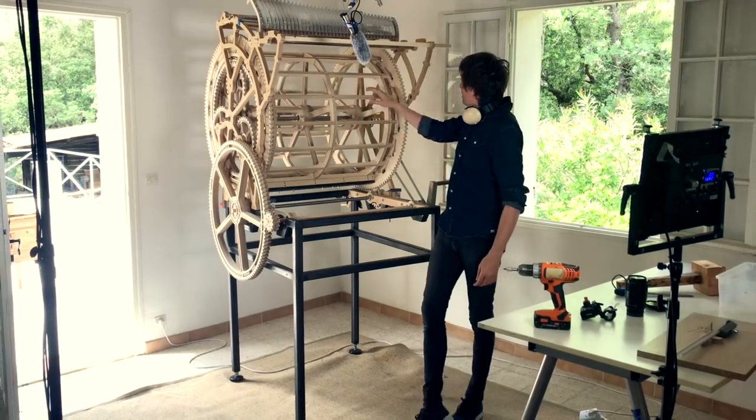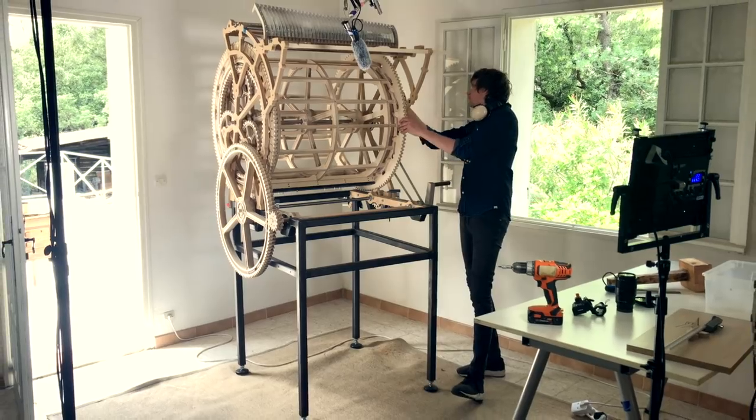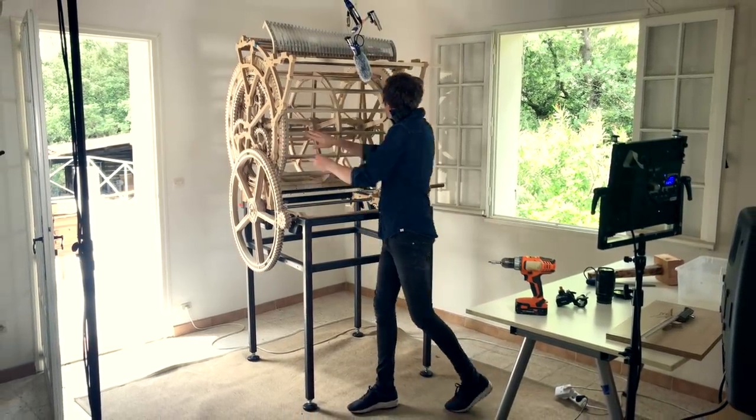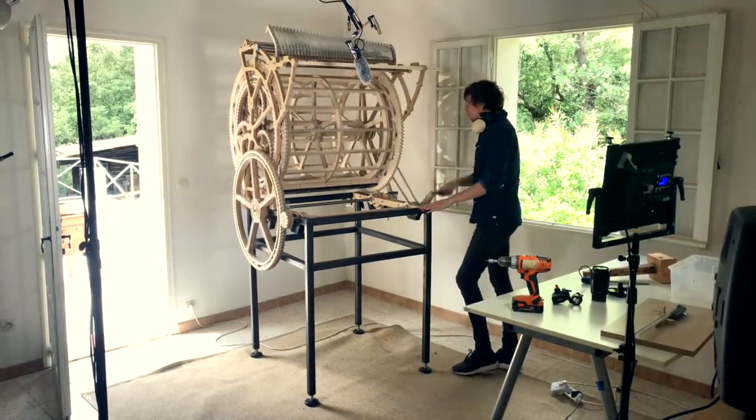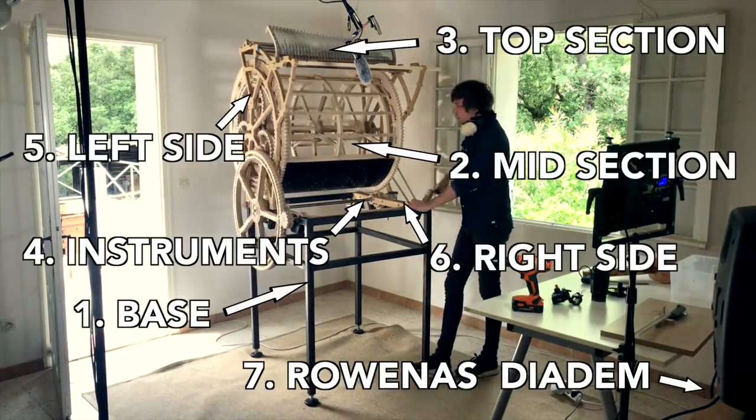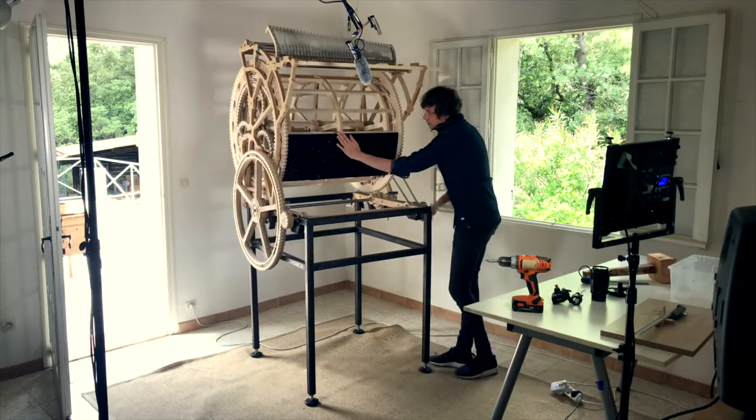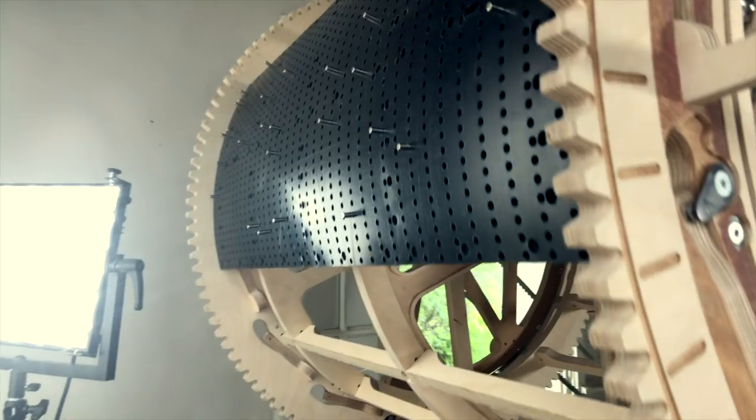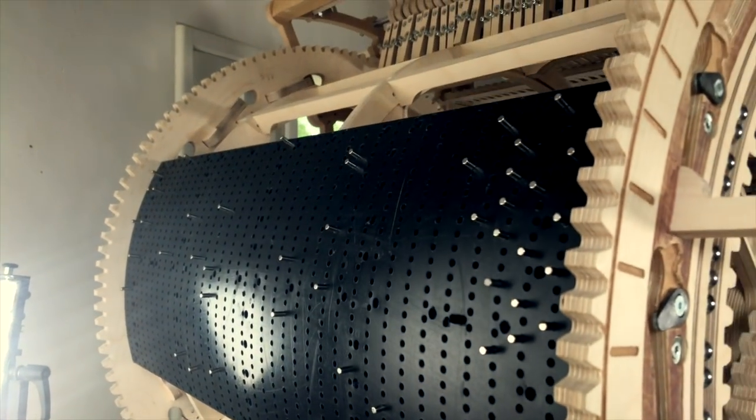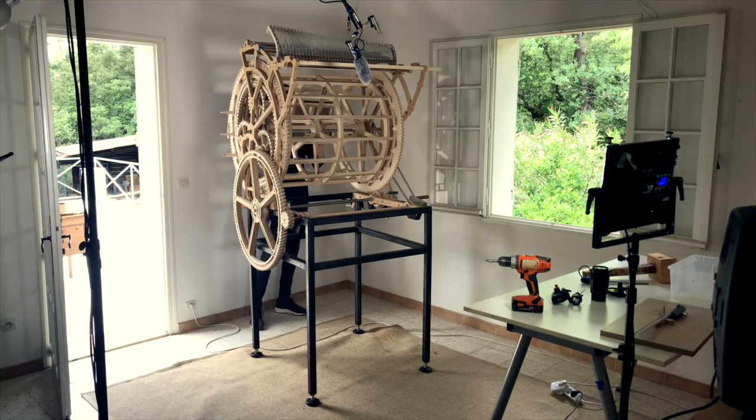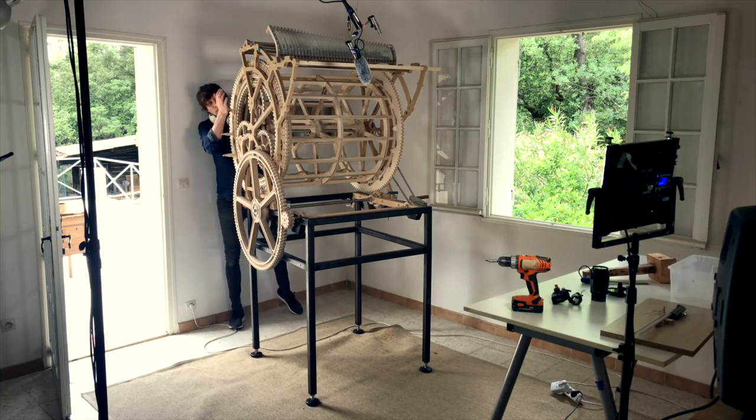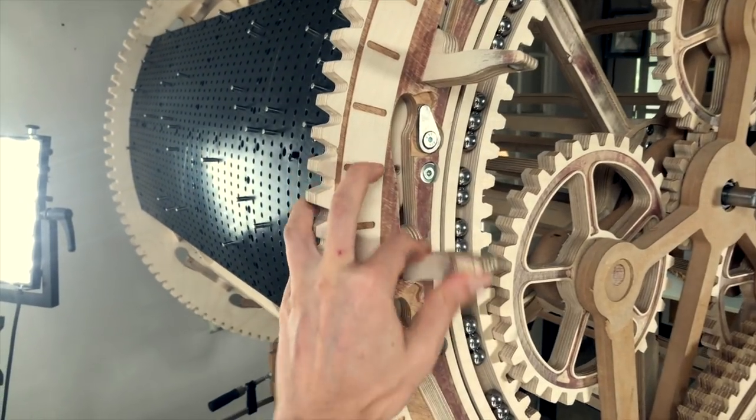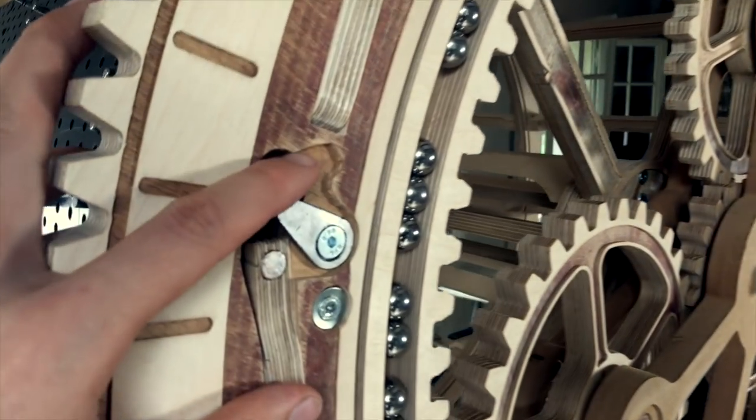One of the major design challenges in making Marble Machine X has been to get it ready for performing live music on stage. For example, we have designed it in seven different sections that can be easily disassembled and assembled. And we've also implemented these programming plates that makes it possible to change song from song number one to song number two quite fast on stage during live performance. These programming plates are held in place by these plywood levers and these levers needed to be held in place themselves.